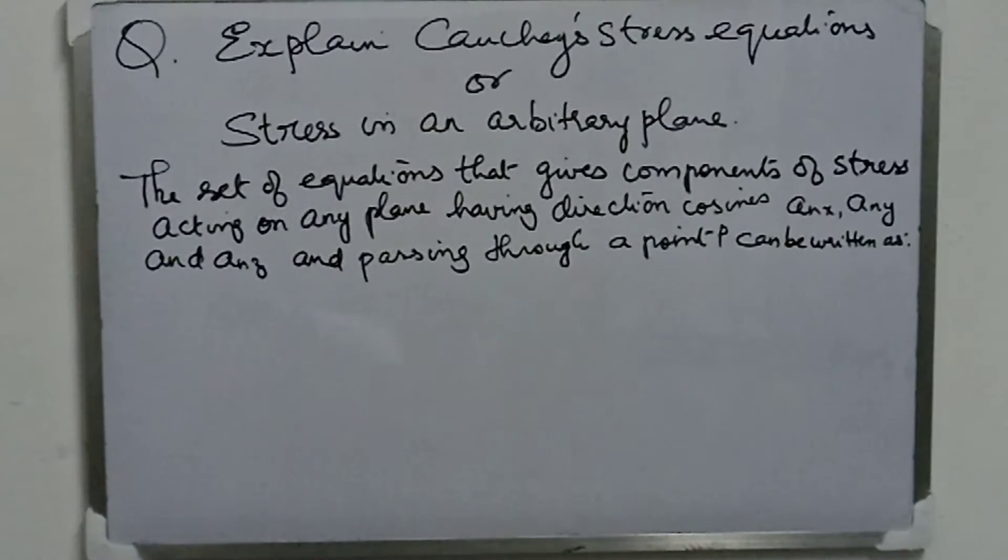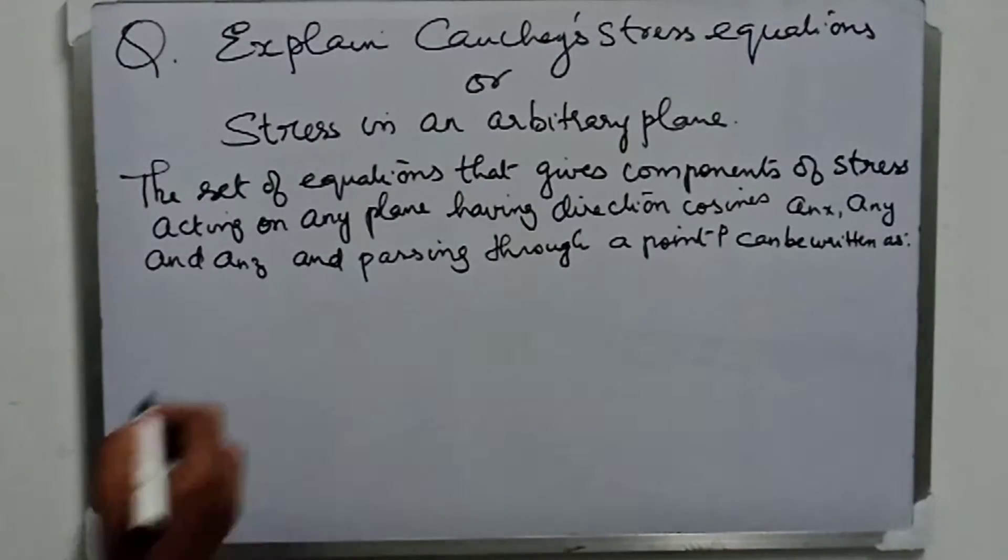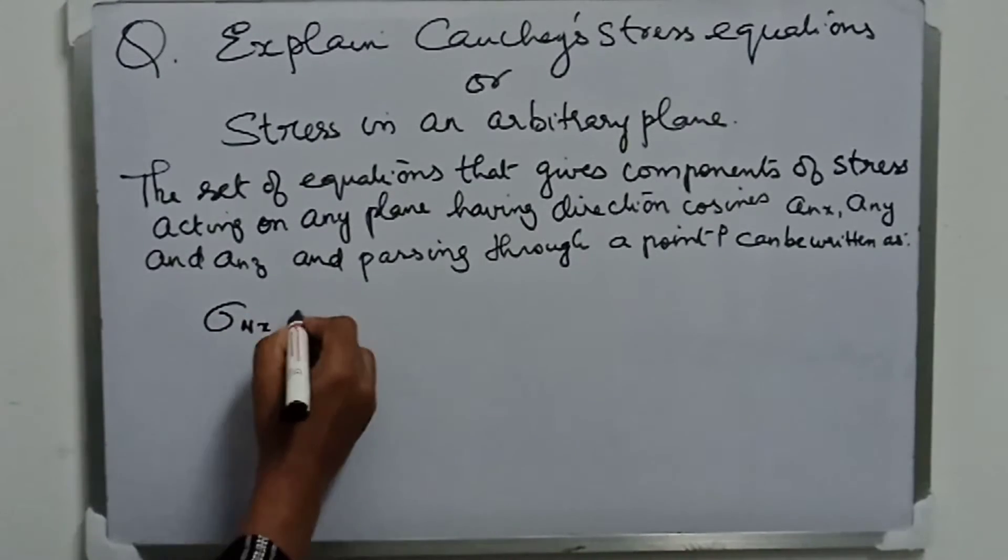The set of equations that gives components of stress acting on any plane having direction cosines anx, any, and anz and passing through a point P can be written as σnx is equal to: